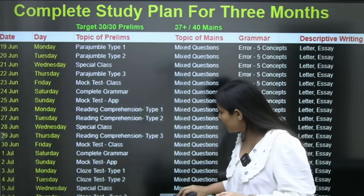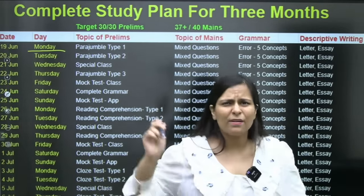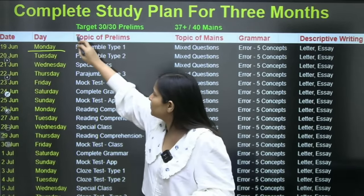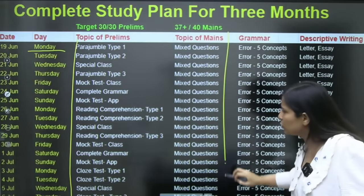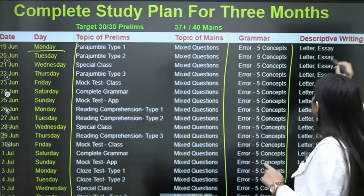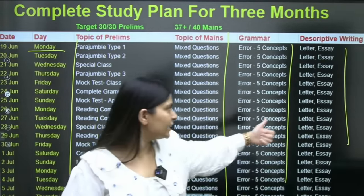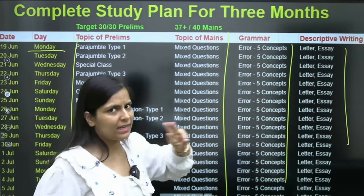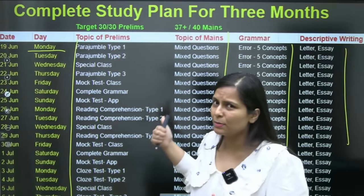This is a complete study plan. We are going to start it from 19th, that is Monday. Perfection 8.0, I am going to tell you. So in this way, we will do the prelims, we will do the mains topics, we will do the 5 concepts, we will do the descriptive writing. I will do the editorial session, and I will give you letter writing. So in this way, there is a total study plan for 3 months. I will include all things.